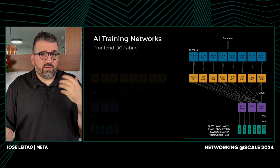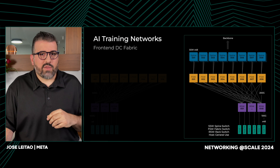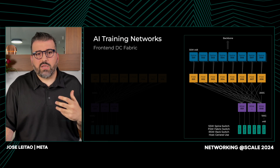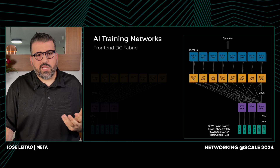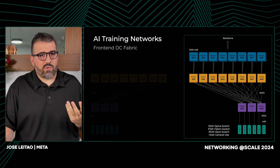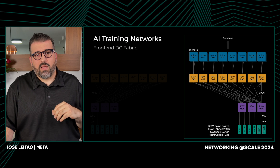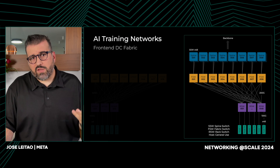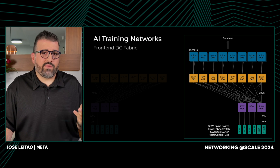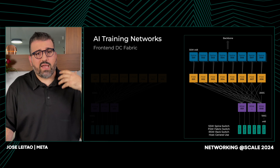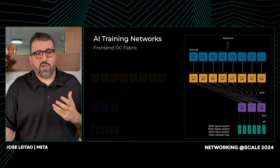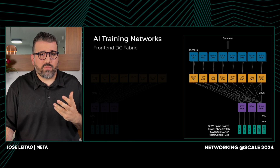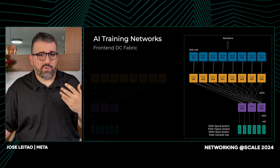The front-end fabric plays a crucial role in the AI training ecosystem. This fabric is designed to efficiently accommodate data ingestion. It also supports the initialization and management of the communication libraries. By optimizing data ingestion and control traffic, the front-end fabric facilitates a seamless, efficient network that enhances the overall performance of the AI training process.